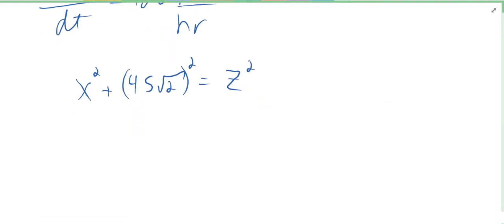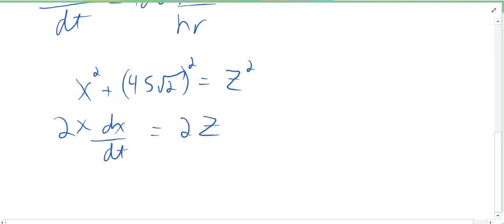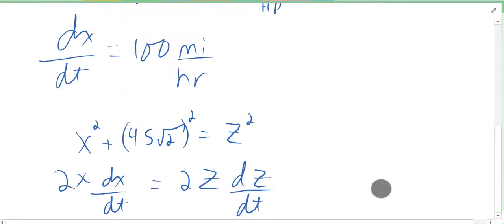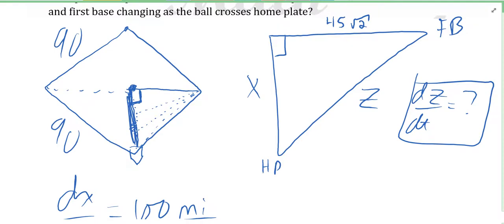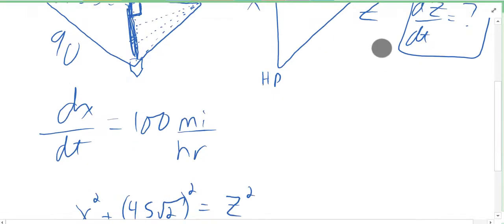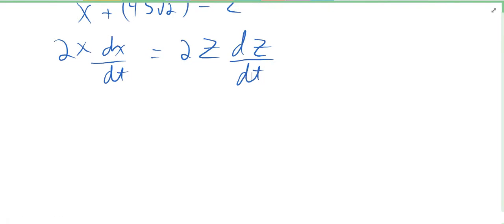Deriving that's super easy. We're going to get 2x(dx/dt) equals 2z(dz/dt), because the 45 root 2 squared is a number - you derive it and you just get 0. We're going to plug in all the stuff we know. Do we know what z is? The moment that ball crosses home plate, from home to first, how far should that be? 90 feet.